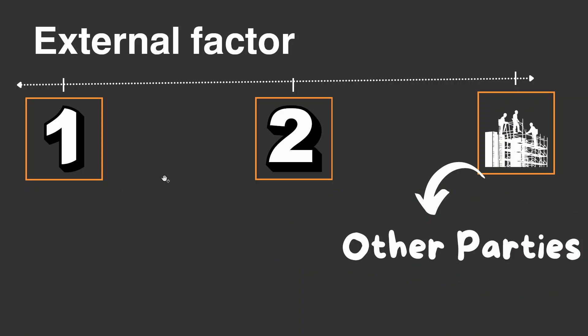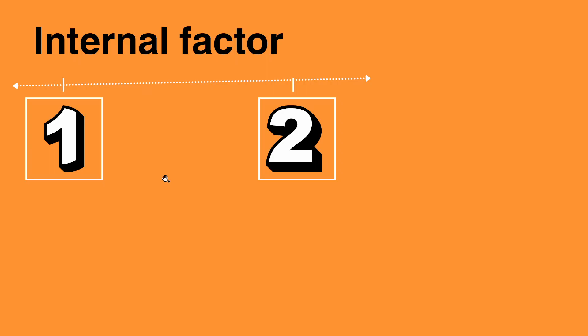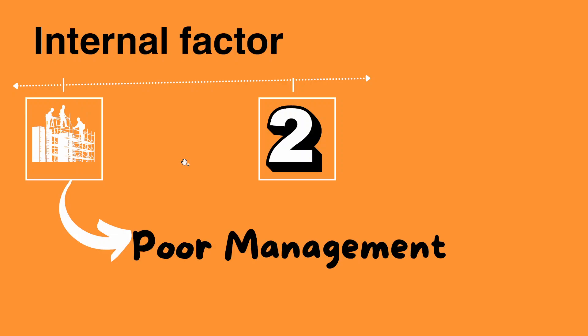If we look at the subcontractor types, we need to divide them into categories. Another key point is poor management — that is a key factor even on your contractor side. Poor management leads to variation and change orders.